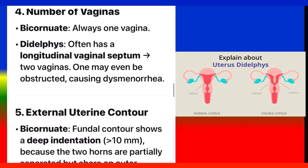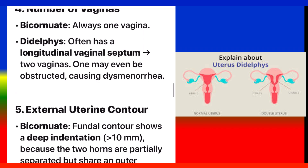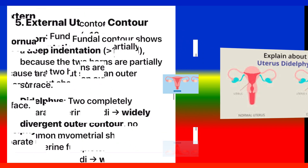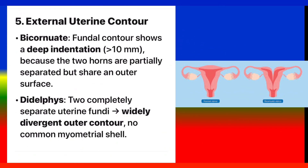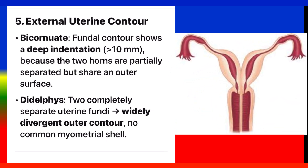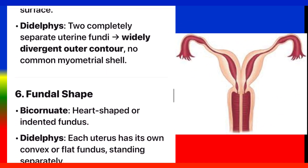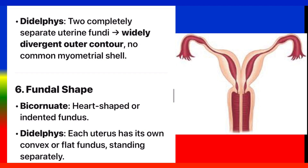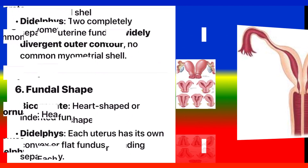One vagina in didelphys may even be obstructed, causing dysmenorrhea. Point 5: External uterine contour. Bicornuate: fundal contour shows a deep indentation greater than 10 mm, because the two horns are partially separated but share an outer surface. Didelphys: two completely separate uterine fundi with a widely divergent outer contour and no common myometrial shell.